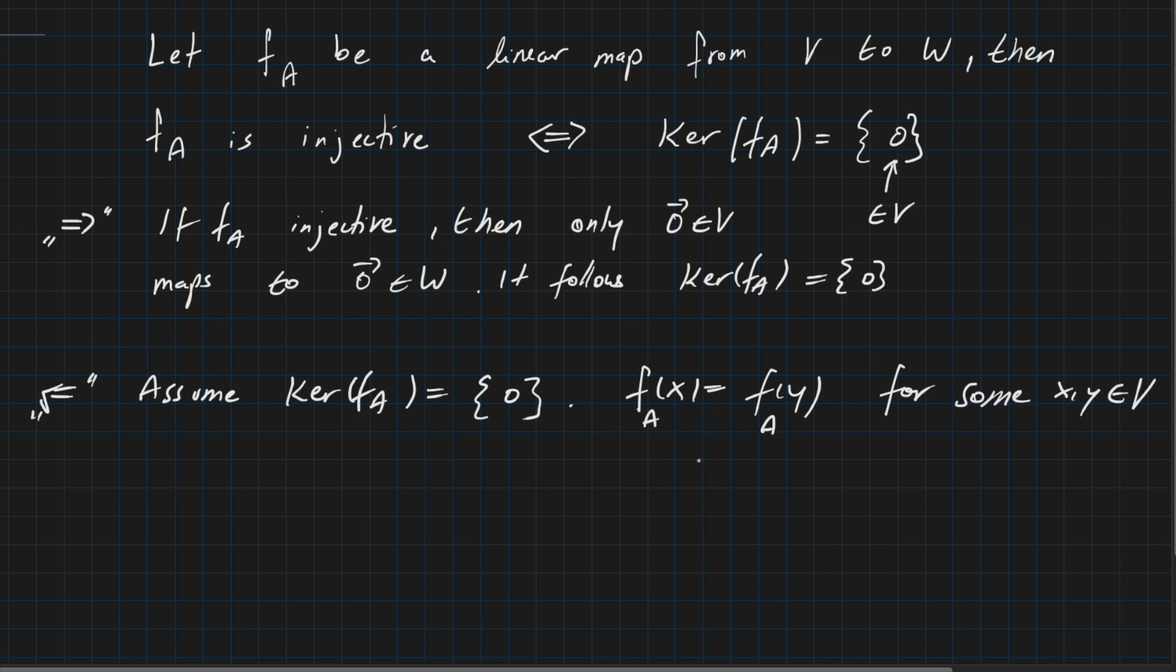And this equality is exactly the same as the following. So we can write something equivalent here: FA(x) - FA(y). We just put the right hand side to the other side and this equals 0. And because FA is a linear map, FA is linear, we can combine them here. We have then FA(x - y) = 0.